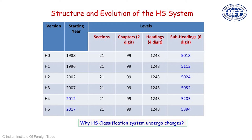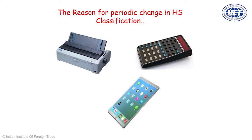The chapters and headings are not changing over time, but the HS classification changes almost every five years — specifically the subheadings at the 6-digit level — because new products are coming into international business and old products go out. A good example: the dot matrix printer was being traded in the 90s, but nobody trades it now. The iPhone was not traded earlier, but today it is one of the major trade items.